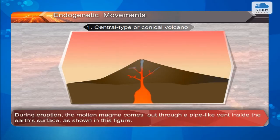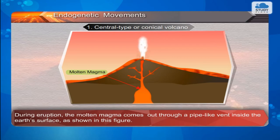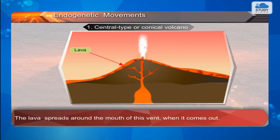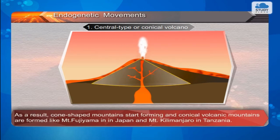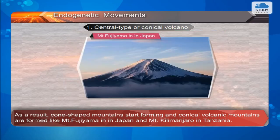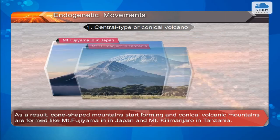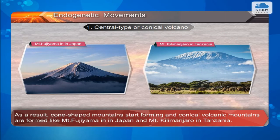Central type or conical volcano: During eruption, the molten magma comes out through a pipe-like vent inside the Earth's surface as shown in this figure. The lava spreads around the mouth of this vent when it comes out. As a result, cone-shaped mountains start forming, and conical volcanic mountains are formed — like Mount Fujiyama in Japan and Mount Kilimanjaro in Tanzania.